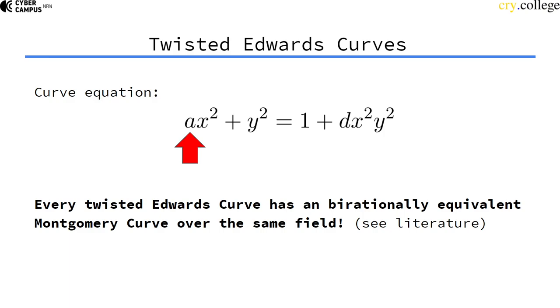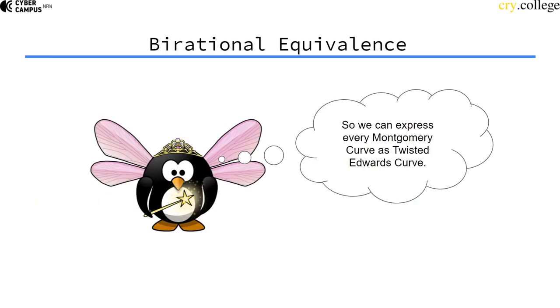So we can take a Montgomery curve and rewrite it to a twisted Edwards curve, mapping all its points accordingly. We can express every Montgomery curve as a twisted Edwards curve, which will come in quite handy.